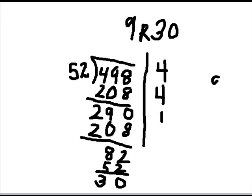But let's see if it worked. So we're going to check. 9 times 52. 9 times 2 is 18. Put down the 8. Carry the 1. 9 times 5 is 45 and 1 is 46.